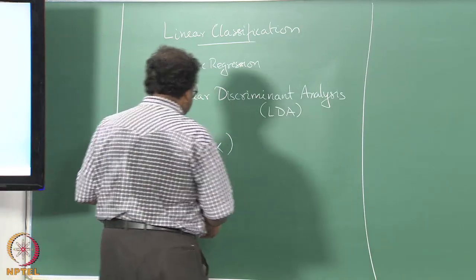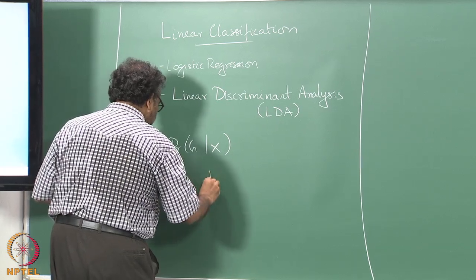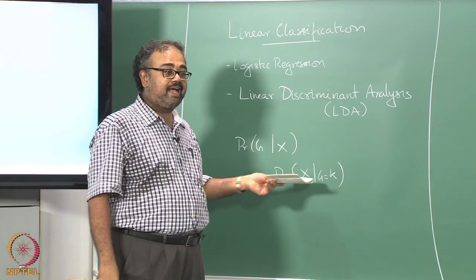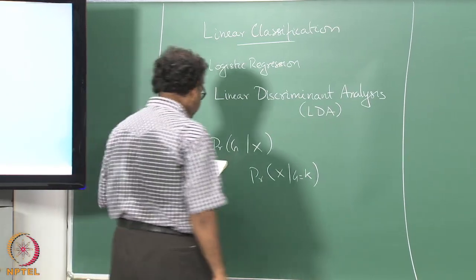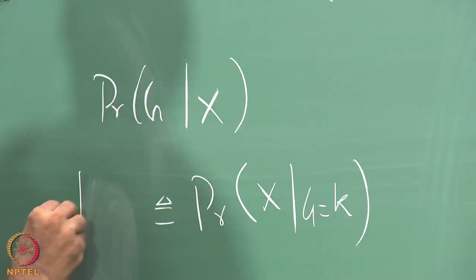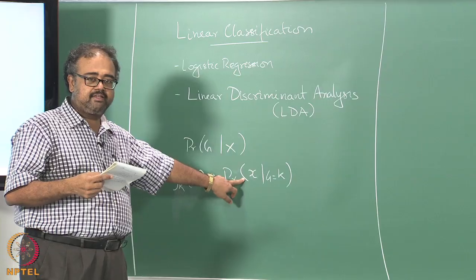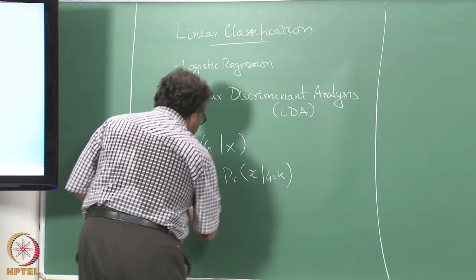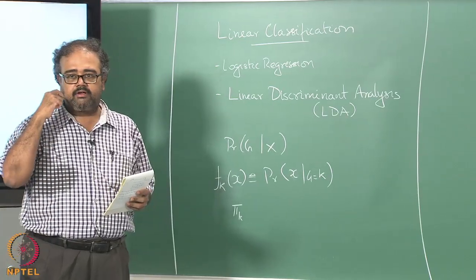What we will do is we will start by making assumptions on probability of the data point given the class is K. These are also known as class conditioned densities, the class conditioned density. I am going to assume that pi k is the prior probability of class.